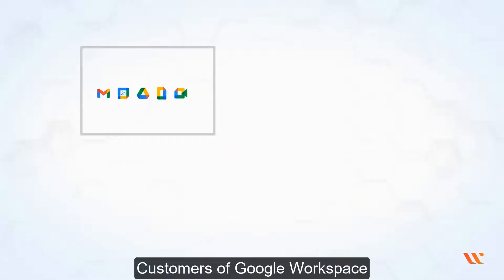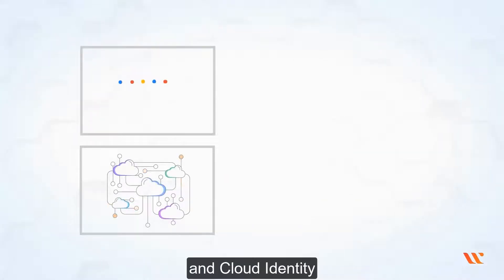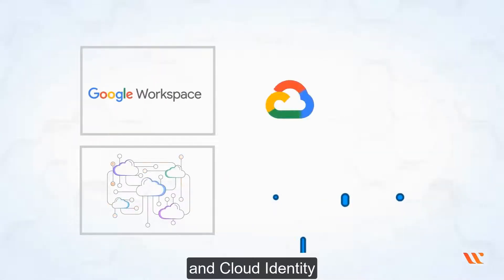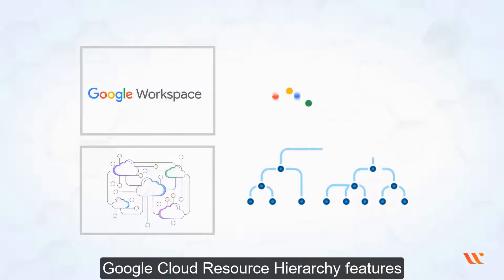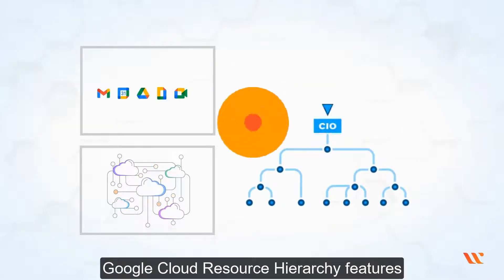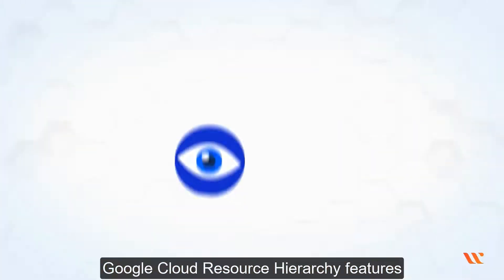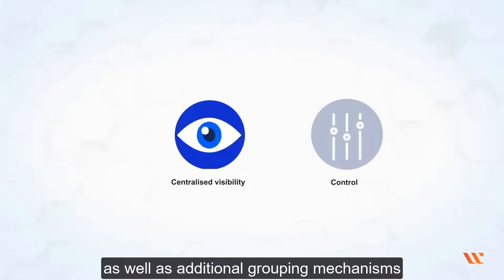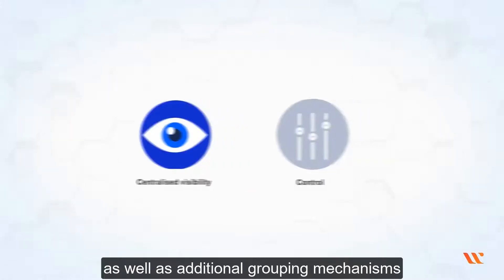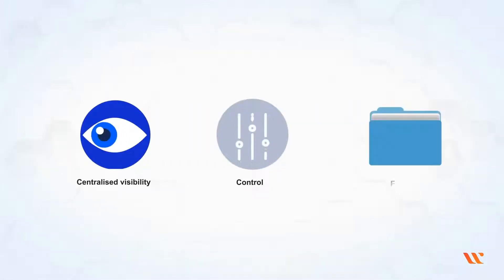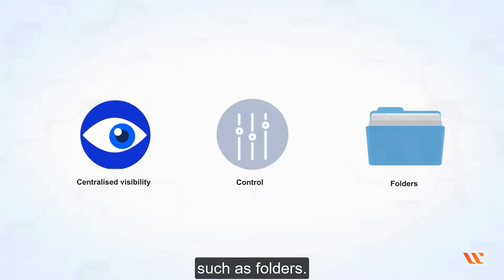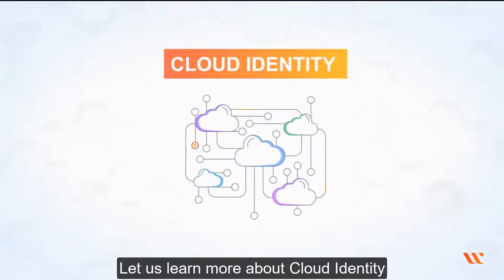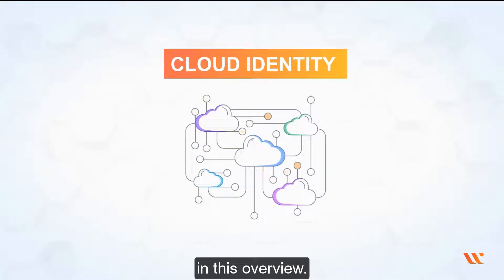Customers of Google Workspace and Cloud Identity have access to additional Google Cloud Resource Hierarchy features such as centralized visibility and control, as well as additional grouping mechanisms such as folders. Let us learn more about Cloud Identity in this overview.